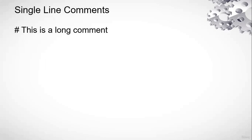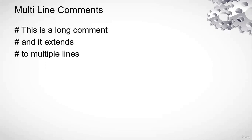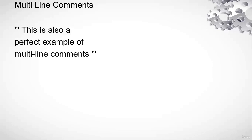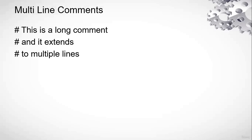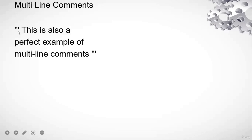For a single-line comment, we use hash. For a multi-line comment, there are two options: you can put a hash at the beginning of every line, or you can use triple quotes at the start and at the end of the comment block. So multi-line comments in Python can be written in two ways: hash on every line, or triple quotes enclosing the comment.